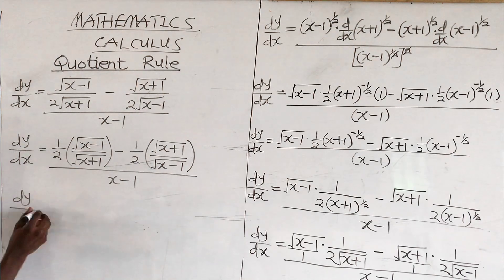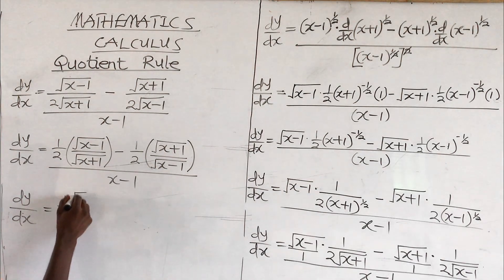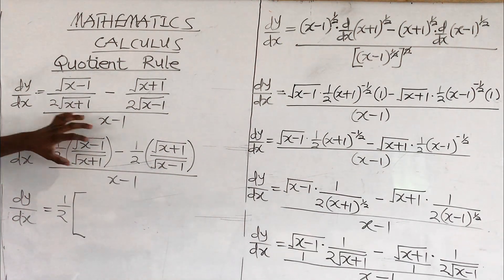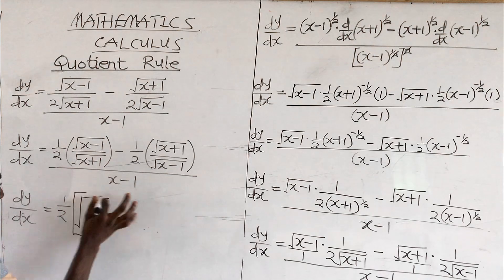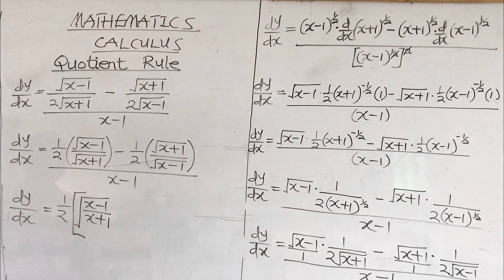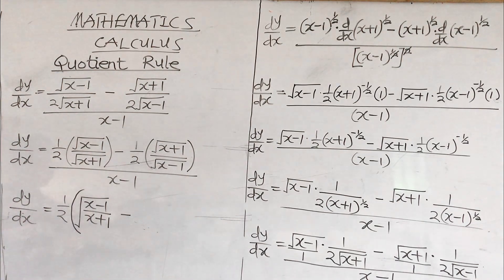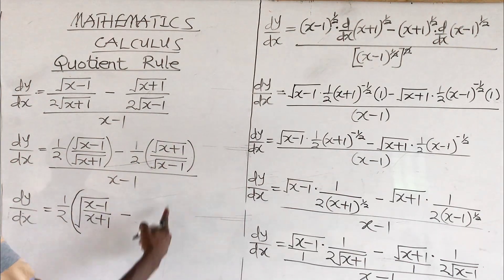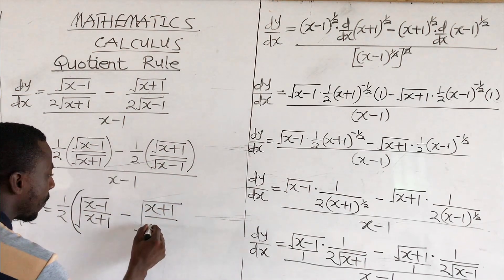Now for the final answer — there is a half in each term, so we factor half out. We have one half in a big bracket. The remaining terms both contain radicals, so they can share a common radical: root of (x minus 1) over (x plus 1), minus root of (x plus 1) over (x minus 1), all over x minus 1. This is our final answer for the derivative.